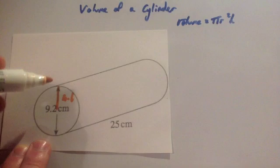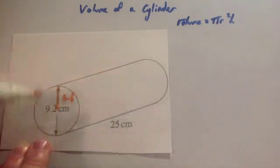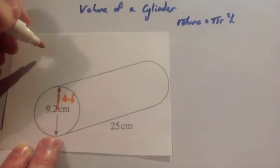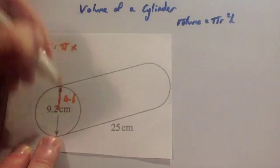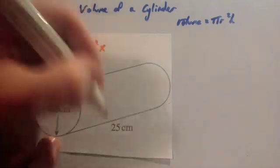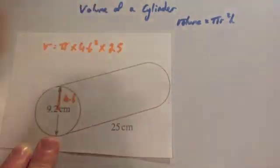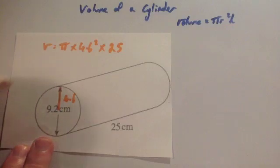So we're going to get the area of the circle at the front, and then we're going to times it by how long it is. Or you could just use the formula straight away, which is volume equals pi times the radius 4.6 squared times the length, which equals 25. And you could do that in one go. I personally do the area of the front first of all. So I do pi r squared.